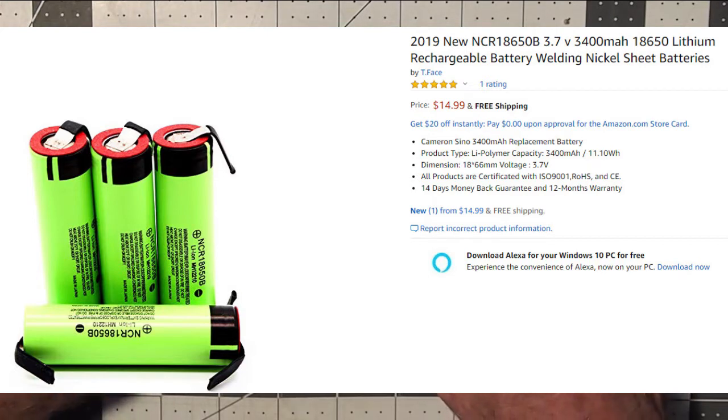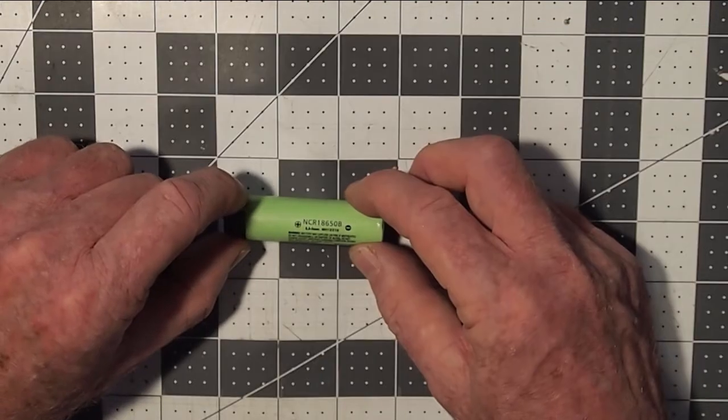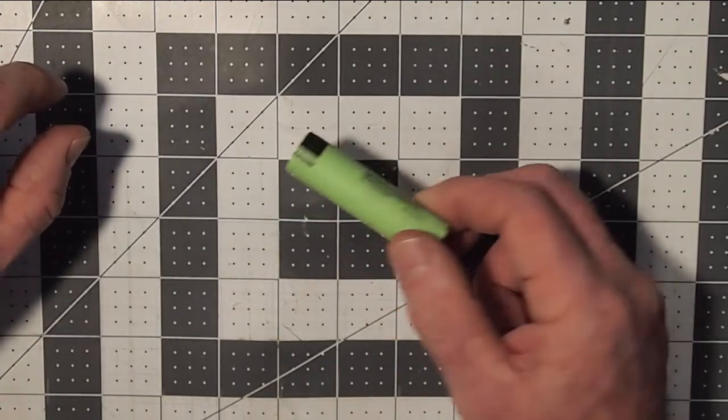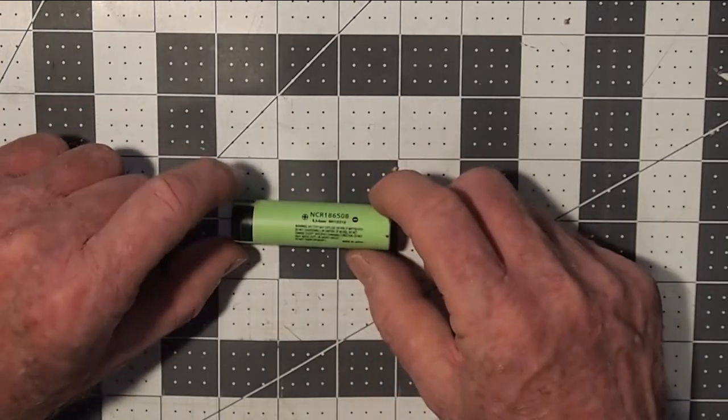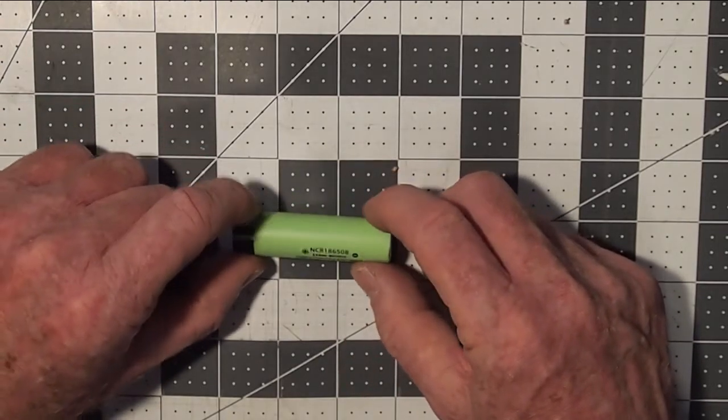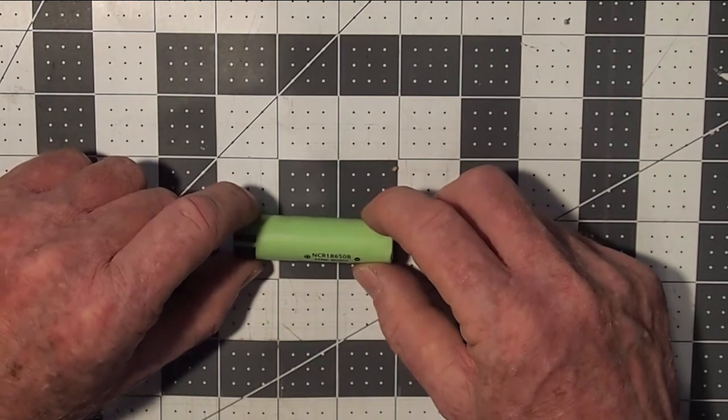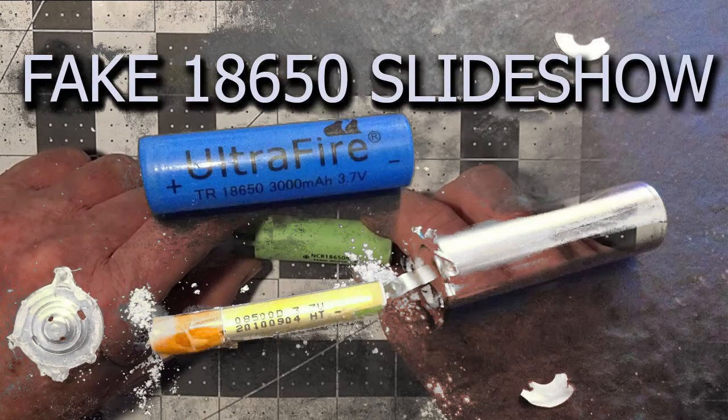Ones that go cheaper on Amazon and other places are suspect because this is also, because of its popularity, a highly counterfeited cell. If you're buying them, you really have to make sure you're getting them from a good supplier.